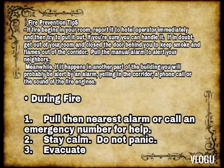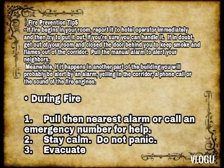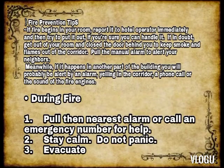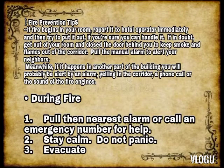Fire prevention tips: If fire begins in your room, report it to the hotel operator immediately, then try to put it out if you are sure you can handle it. If in doubt, get out of your room and close the door behind you to keep smoke and flames out of the corridor. Pull the manual alarm to alert your neighbors. If fire happens in another part of the building, you will probably be alerted by an alarm, yelling in the corridor, a phone call, or the sound of fire engines.